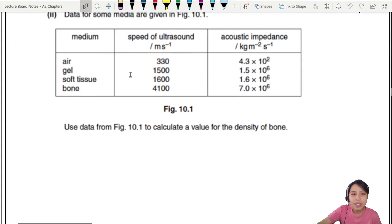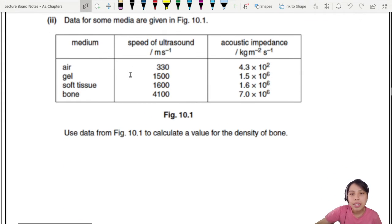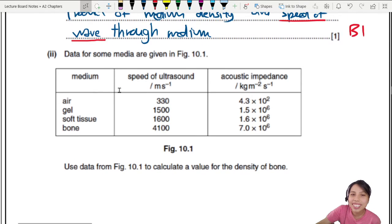So now they give us data for some media. Many medium we call media. Media is not like movie video. Many medium is called media. So each medium - air, gel, soft tissue, bone got all this speed. This is our C and our acoustic impedance Z.